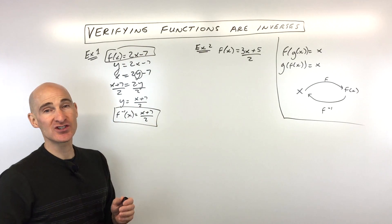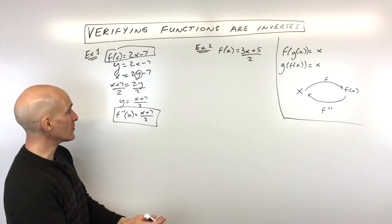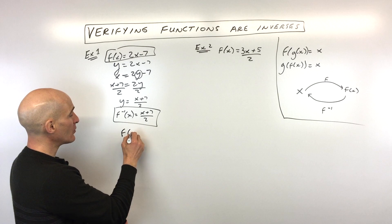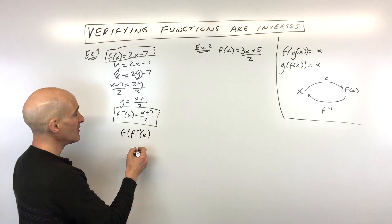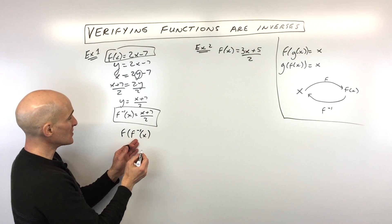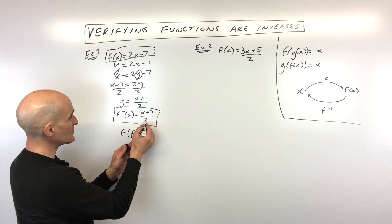What we want to do is we want to say, okay, let's check F of F inverse of X. So what we're going to do is we're going to take our inverse function, which is X plus seven over two.